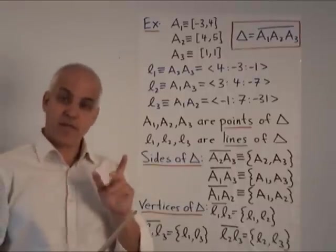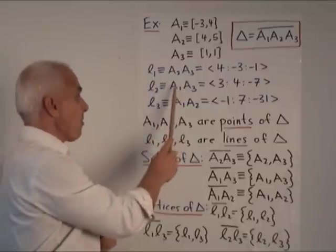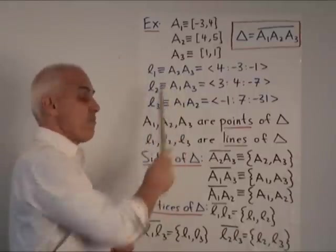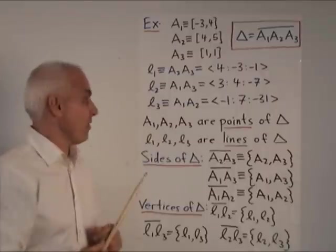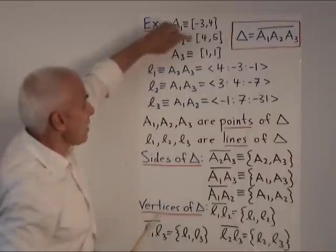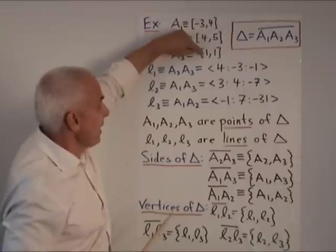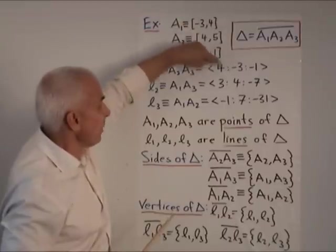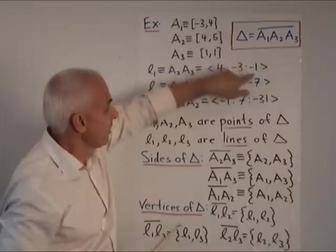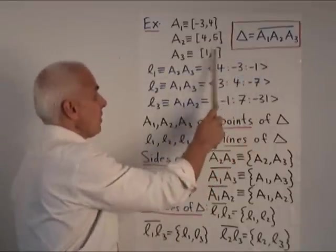That triangle has three lines. The lines are the ones formed by pairs of points. And the join of points theorem allows you to compute those. For example, to compute the line through A2, A3, we take y₁ - y₂, that's 4, then x₂ - x₁, that's -3, and then 4 times 1 minus 5 times 1, that's -1. You can check that this line goes through those two points.